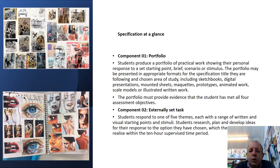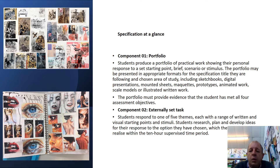The GCSE course is split into two areas, otherwise known as components. There's component one, which is the portfolio — this is covered for the whole of year 10 and half of year 11. And component two, which is the externally set task, or in other words, the exam.